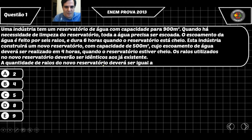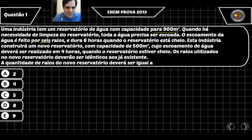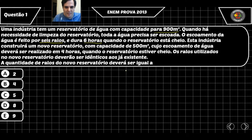Vamos separar o que já temos. No reservatório 1, a capacidade é 900 metros cúbicos, com 6 ralos e 6 horas. Para o segundo reservatório, a capacidade é 500 metros cúbicos, e ele quer que o escoamento seja feito em 4 horas. Precisamos encontrar a quantidade X de ralos novos.